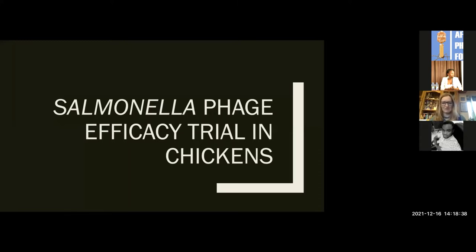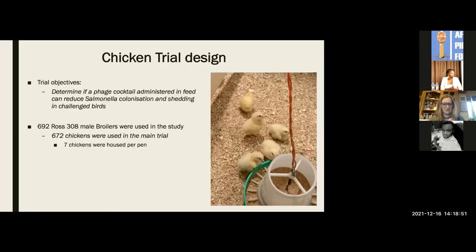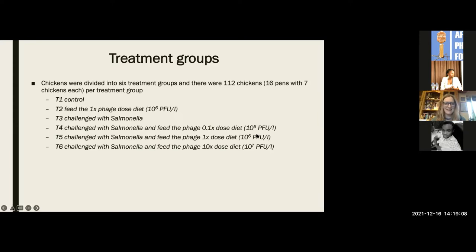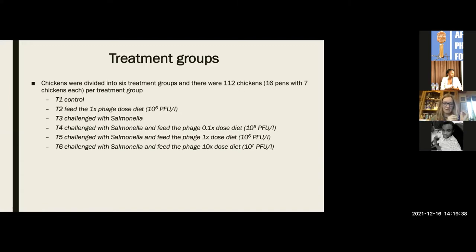We wanted to look at poultry because the poultry industry has a major problem with salmonella, and we'd like to reduce the amount of antibiotics given to chickens and provide producers with an alternative. We used the same phages, and this trial aimed to see if we could put phages into feed and reduce colonisation and shedding of birds given salmonella. This was a much bigger trial — nearly 700 birds — and we included three different doses of phages.